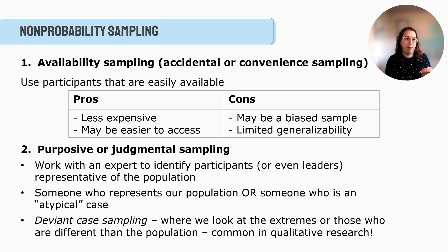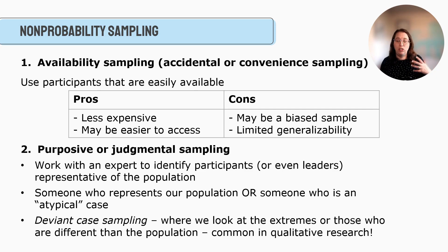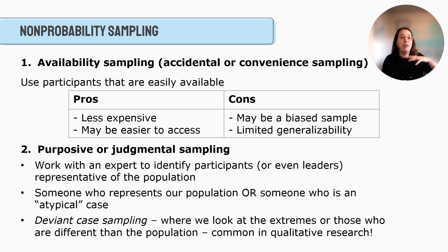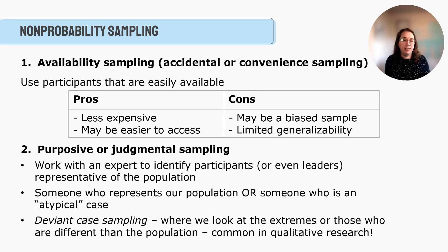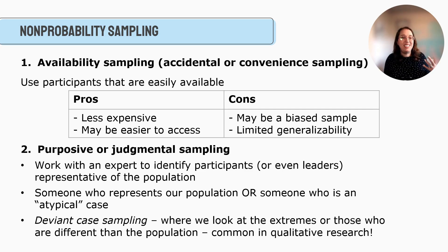The second type is purposive or judgmental sampling, where you work with an expert in the community to identify participants or leaders who might be representative of the population. For example, if you want to study recently unhoused individuals, you might go to a local homeless shelter and work with the director, who recommends individuals who'd provide good information. Sometimes we also look for atypical or deviant cases — if 95% of people respond one way after a natural disaster and 5% respond differently, we might study that 5% to understand why they differ. This is really common in qualitative research.